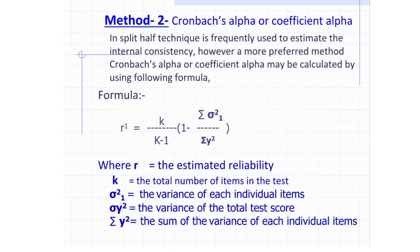Method 2 uses Cronbach's alpha or coefficient alpha formula. This split-half technique is frequently used to estimate internal consistency. In this formula, R stands for estimated reliability; K is the total number of items in the test; delta squared is the variance of each individual item; Y squared is the variance of the total test; and summation of Y squared is the sum of the variance of each individual item. This is the formula used for calculating reliability with the Cronbach's alpha or coefficient alpha method.